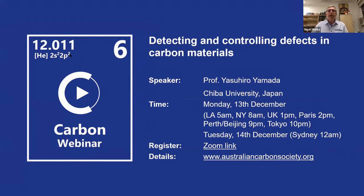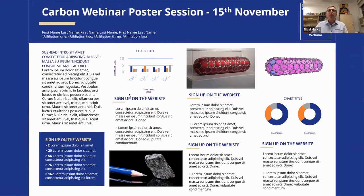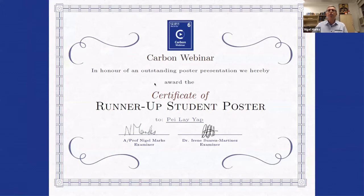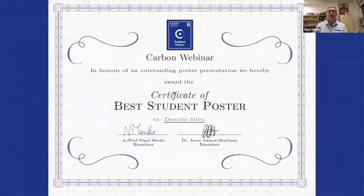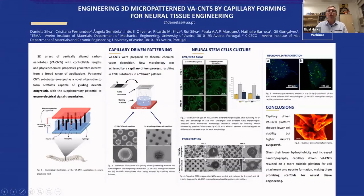Before we begin, we have some prizes to announce for the carbon webinar poster session held one month ago. In the student section, the runner-up is Pei Leya, whose topic was detecting carbonaceous counterfeits in graphene. The winner in the student section is Daniela Silva, whose topic was carbon nanotubes for neural tissue growth. Both winners will have the opportunity to present a short talk in a 2022 carbon webinar.